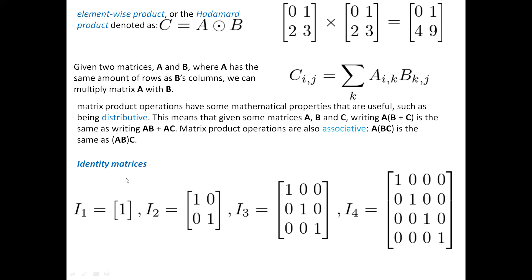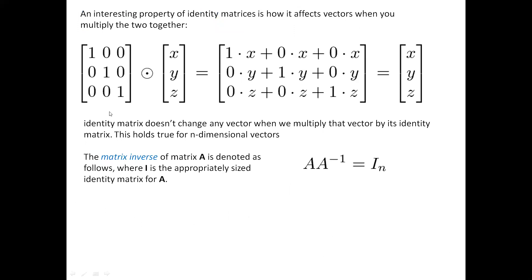The next topic is the identity matrix. An identity matrix can have any size: 1 by 1, 2 by 2, 3 by 3, 4 by 4, and so on. It is a square matrix in which the diagonal elements are always 1 and all remaining elements are 0. In I2, I3, and I4, the diagonal is 1 only and all remaining elements are 0. You can use any size of identity matrix.